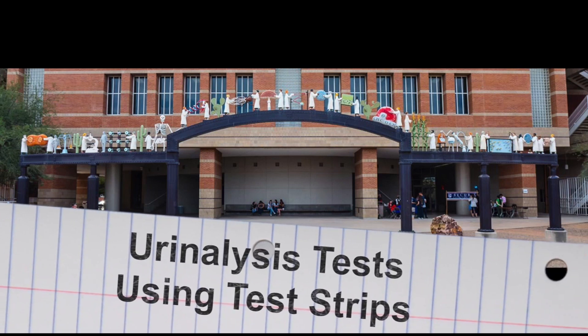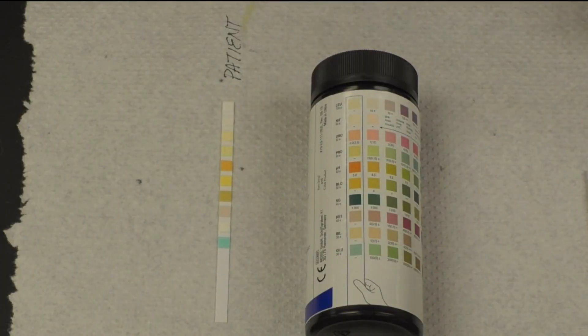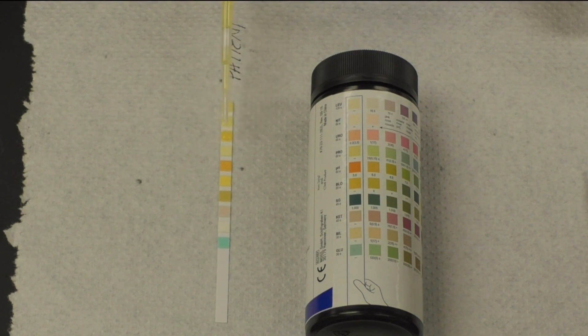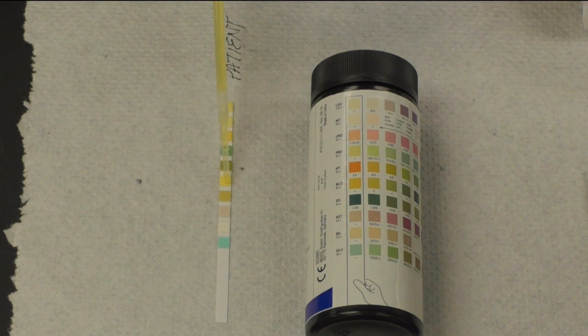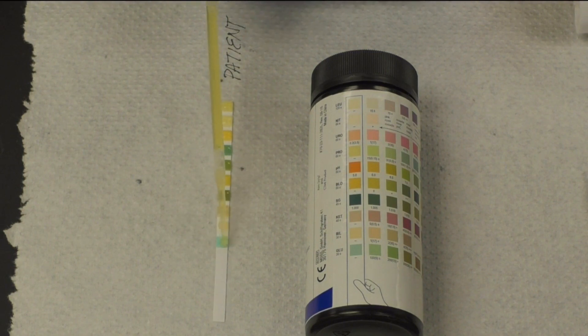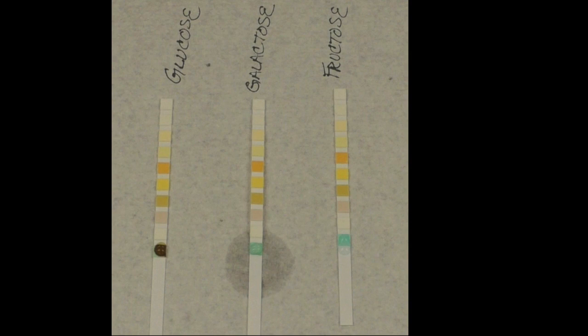This video will demonstrate the correct procedure for using reagent test strips to perform a urinalysis. Test strips are a quick and fairly inexpensive way to test urine for a wide variety of issues. The results will often provide guidance for further testing. The most important factors when using test strips are timing and your ability to interpret color. The tests are very specific, but can be skewed by other chemicals commonly used in labs.